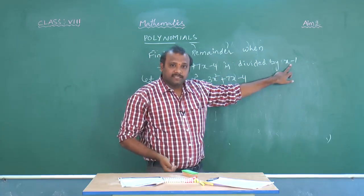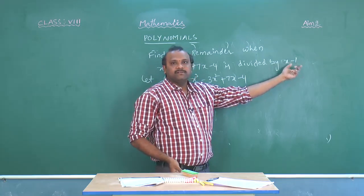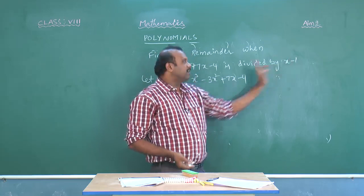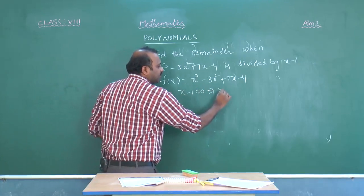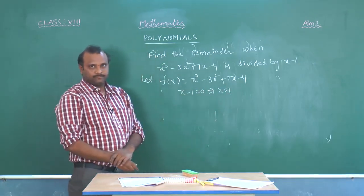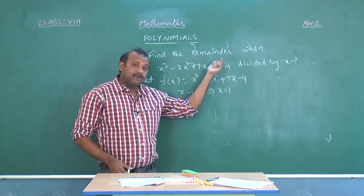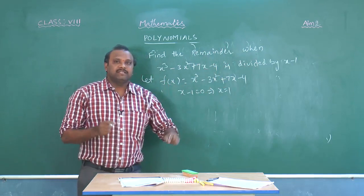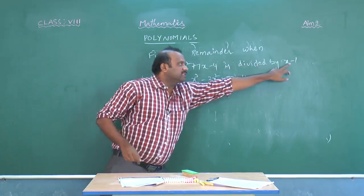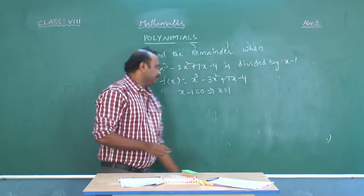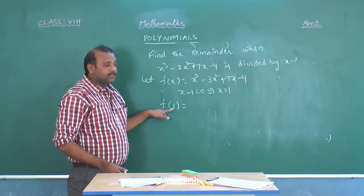As we discussed in Aim 1, first we find the zero of the divisor polynomial. Set x minus 1 equal to 0, which gives x equal to 1. Now we substitute this value into f of x. So we find f of 1, meaning in place of x we substitute 1, because the polynomial is divided by x minus 1.